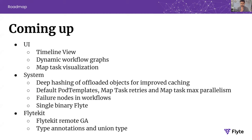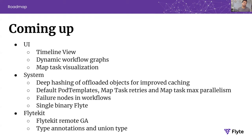Another requested item is deep hashing of offloaded objects for improved caching. For example, if you have a pandas DataFrame today, Flight only uses references to cache them. Now you can use your own custom hashing techniques to decide when to cache certain things instead of just using references. Because this can be expensive, it is optional, but if you opt in, you can provide your own hashing methods.